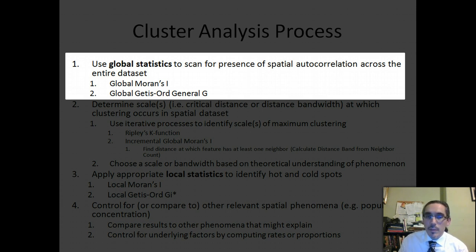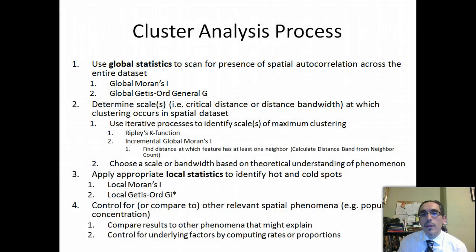In ArcGIS you have two options for that: the global Moran's I or the Getis-Ord General G, both of which tell you whether or not there is clustering or spatial autocorrelation occurring anywhere in the dataset, but they don't necessarily tell you where. It's a quick way of assessing whether or not there's anything worth pursuing or analyzing further.